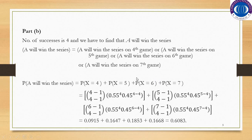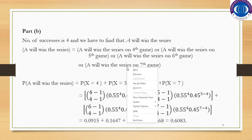By substituting all the parameter values — K = 4, P = 0.55, Q = 0.45 — into the probability mass function of the Negative Binomial Distribution and simplifying, we get 0.6083. This is the probability that Team A will win the series.